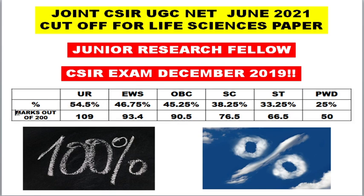That means a student needs to get 109 and above out of 200 to be considered as cleared. There is no separate cutoff for Part A, Part B, or Part C. The cutoff is released overall but varies category wise — so the general category cutoff was around 54.5%, whereas the OBC category cutoff was a little bit lower.